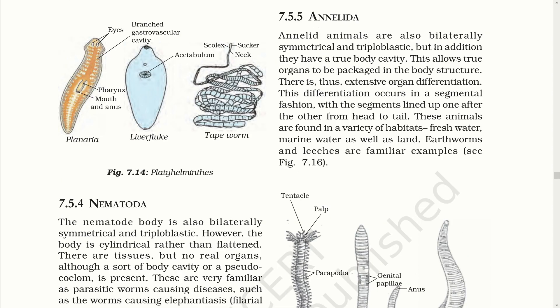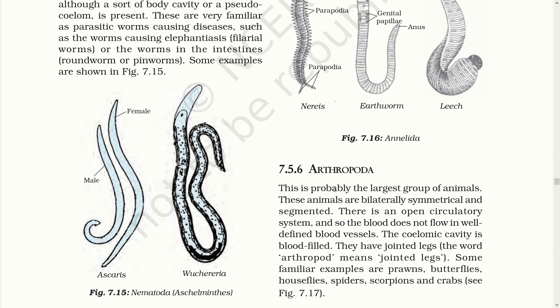Annelida. Annelid animals are also bilaterally symmetrical and triploblastic, but in addition they have a true body cavity. This allows true organs to be packed in the body structure, resulting in extensive organ differentiation. This differentiation occurs in a segmental fashion, with segments lined up one after the other from head to tail. These animals are found in a variety of habitats — freshwater, marine as well as on land. Earthworms and leeches are familiar examples.